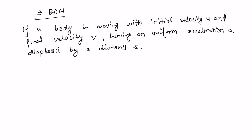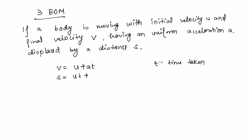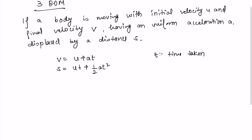...then the three equations of motion are: v equals u plus at, where t is the time taken by the body; s equals ut plus half at squared; and the third equation is v squared minus u squared equals 2as.